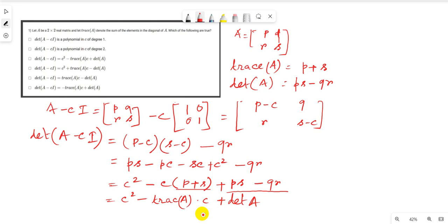We can clearly see that det(A - cI) is a polynomial in c of degree 2. In our options here, det(A - cI) is a polynomial in c of degree 2, and det(A - cI) = c² - trace(A)·c + det(A). These two options are correct.